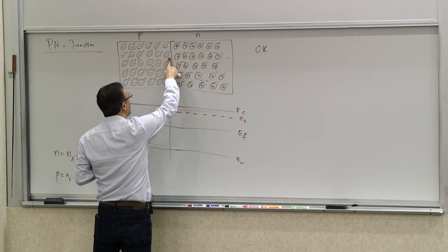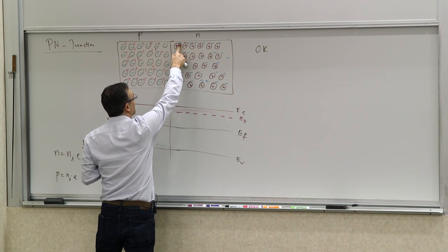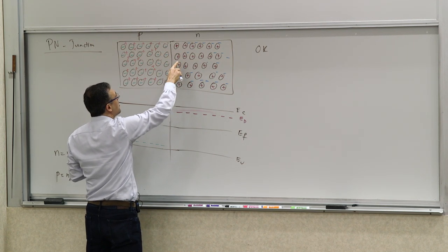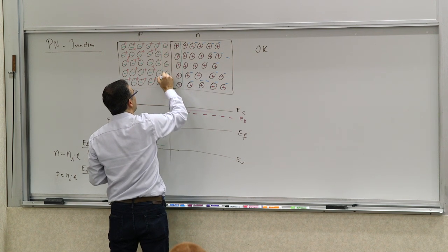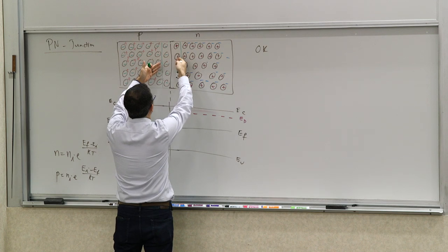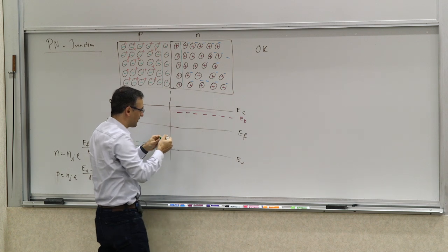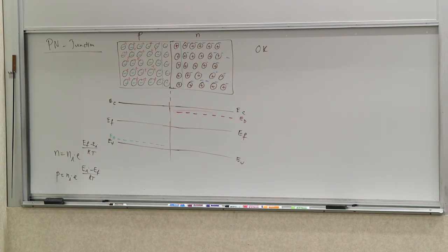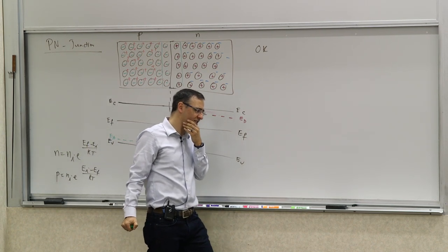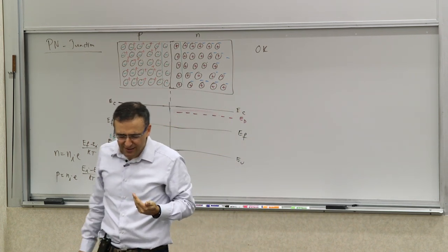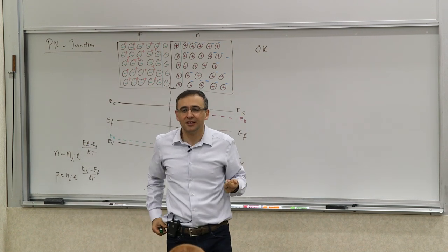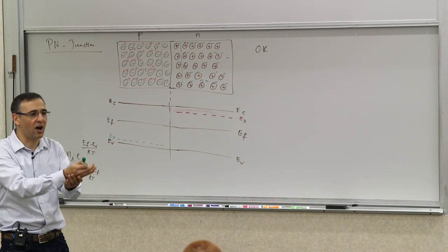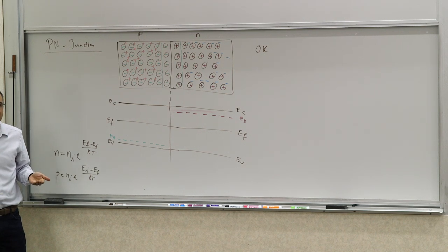At some point, electrons that end up on the other side will recombine — find a hole and they recombine. The same is true for holes. This is most likely to happen at the borderline, right? So gradually your border starts getting depleted of these charge carriers. You gradually start forming a region where the free charge carriers are gone, because as soon as they end up in this region, there's a higher probability of recombining with the opposite carriers. This is a completely random process.